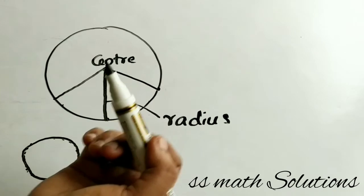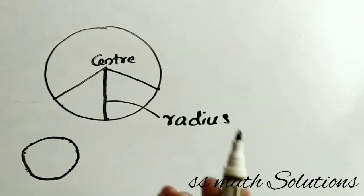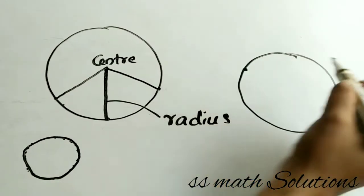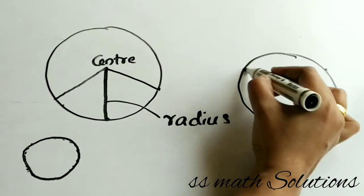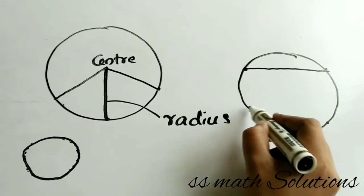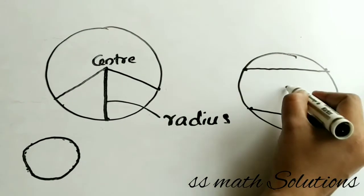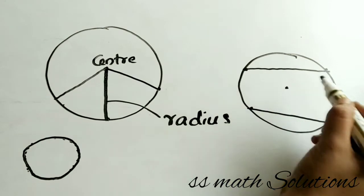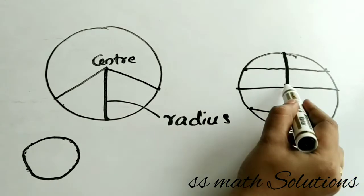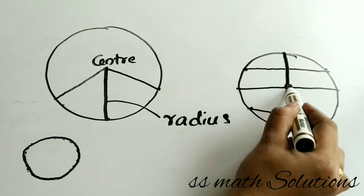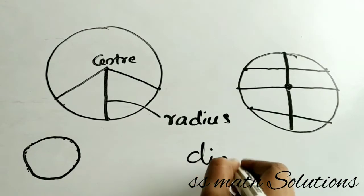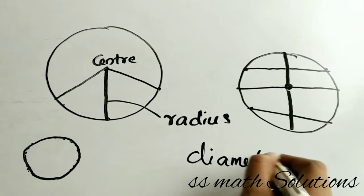We know that diameter is the longest chord. What is a chord? Chord means any two points — joining any two points in a circle — this is called a chord. Some chords will pass through the center, not every chord. The chords that pass through the center are called diameter.